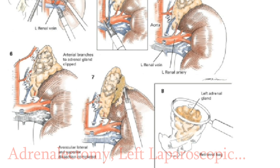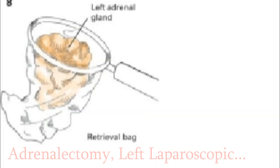The inferior attachments are divided. Finally, the vascular lateral and superior attachments are dissected. The gland is now free for extraction in a laparoscopic retrieval bag. The technique for extraction is described under laparoscopic right adrenalectomy. The tumor bed is then inspected for any evidence of bleeding and any additional hemostasis obtained. The retraction on the pancreas is released and it is returned to its normal position.